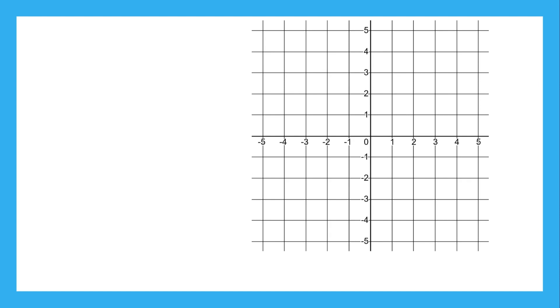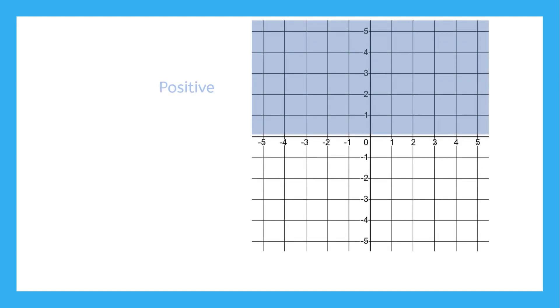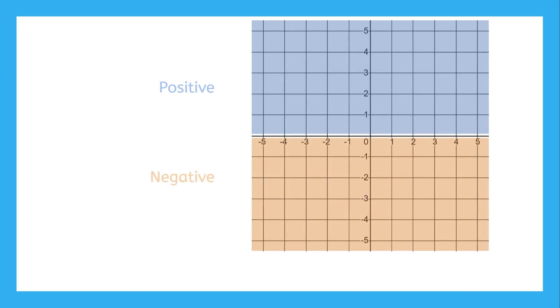It helps to know what you're looking for on a graph, and with positive and negative intervals, it couldn't be easier. Anything above the horizontal axis is positive, and anything below the horizontal axis is negative.